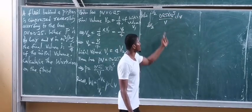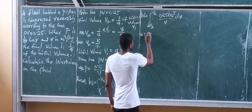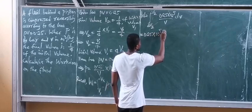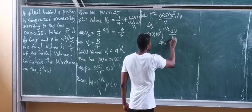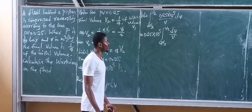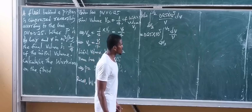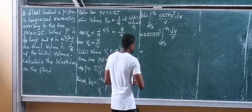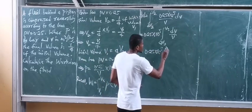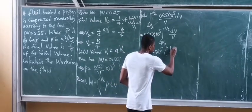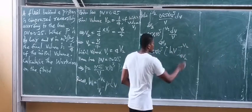Since 0.25 times 10 to the power of 5 is a constant, we can take it outside the integral sign. So we have 0.25 times 10 to the power of 5, integral from 4V2 to V2 of dV over V. The integral of dV over V is natural log of V. So this gives us 0.25 times 10 to the power of 5 times natural log of V from 4V2 to V2.